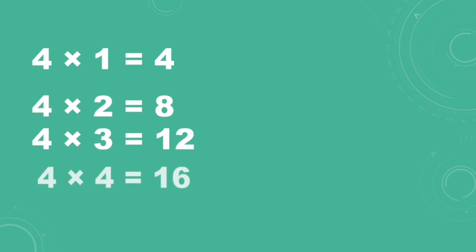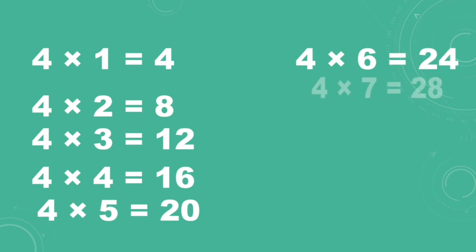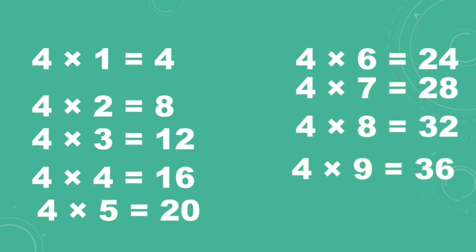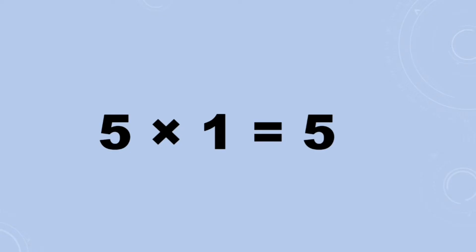Four threes are twelve, four fours are sixteen, four fives are twenty, four sixes are twenty-four, four sevens are twenty-eight, four eights are thirty-two, four nines are thirty-six, four tens are forty. Table of five. Five ones are five.